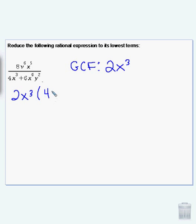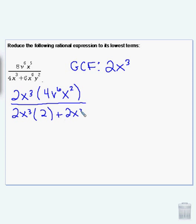That leaves me with 4v to the sixth, x squared. Here, I'm left with 2. And finally, I'm left with 3x squared, y squared.